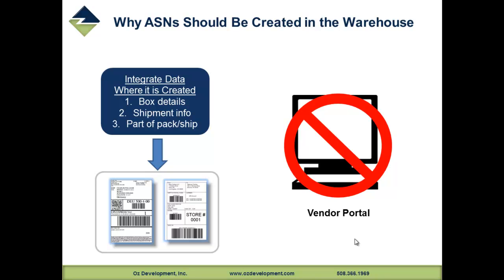All the information for the ASN and the compliant label is generated and captured in the warehouse. As a result, it really should be integrated within that NetSuite process in real-time. If you're using a vendor portal, the challenges you'll have to deal with are data entry issues, timing of sending the ASN, leaving it to a manual process, and a whole set of clerical tasks that add no value to servicing your customers.